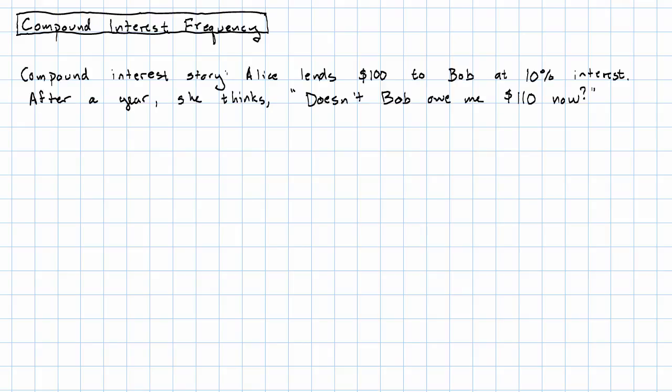Remember that story we told for compound interest? Alice lends $100 to Bob at 10% interest, but then after a year she thinks,